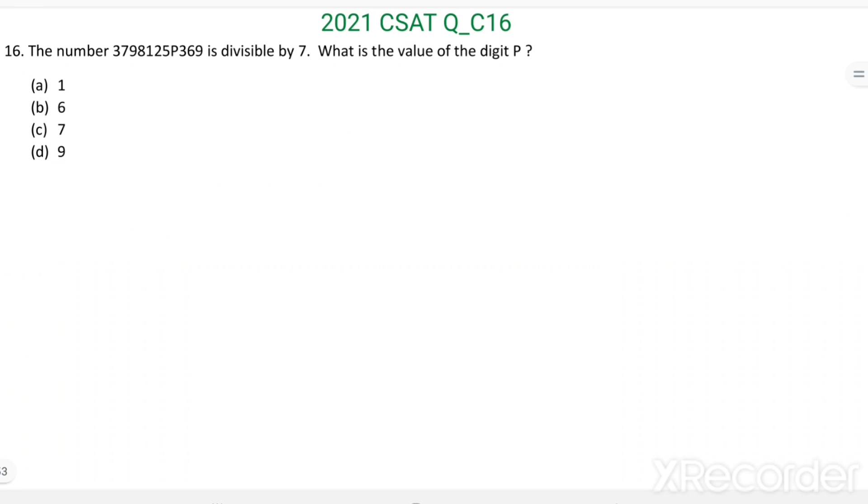Question number 16. The number 3798125P369 is divisible by 7. What is the value of the digit P?